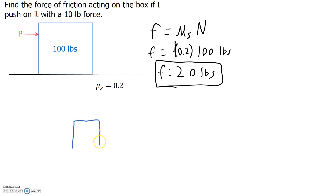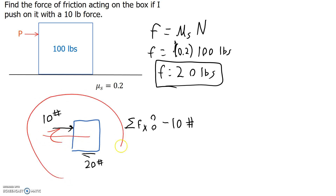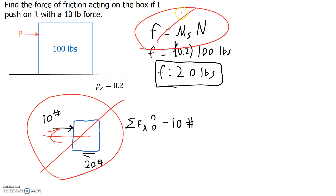If we draw a free body diagram of the box, we immediately see our error. We have our force of ten pounds pushing on the box to the right, and we have our friction force that we calculated of twenty pounds pushing to the left. If we do the sum of the forces in the x direction, we have a net force of ten pounds to the left, which suggests that this box is going to start accelerating to the left even though I'm pushing on it to the right. So that's obviously not right.